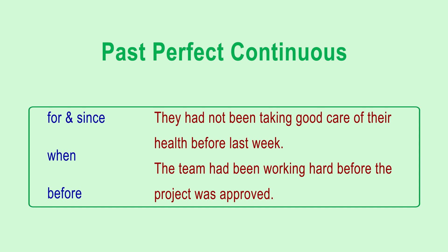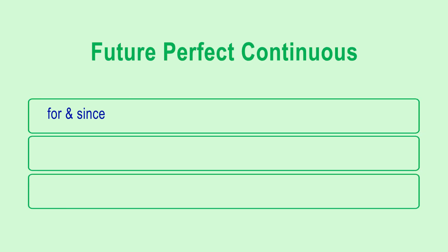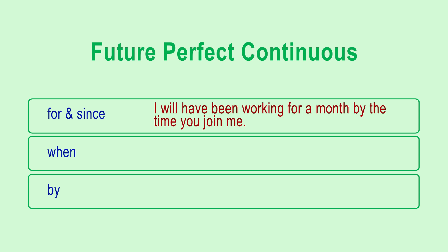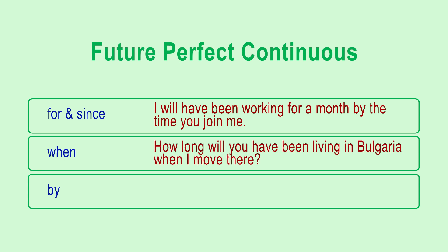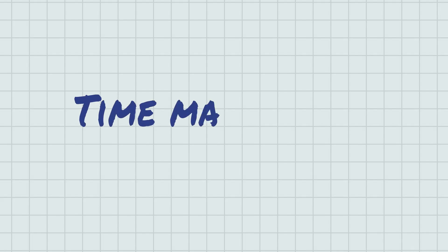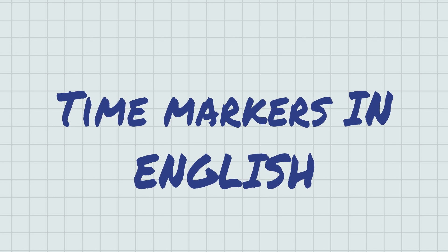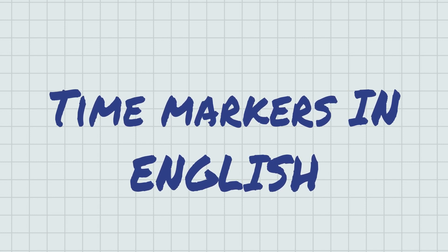In the case of the future perfect continuous tense, we can also think about time markers similar to other perfect tenses: for, since, when.